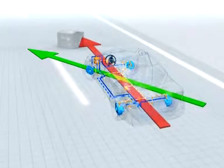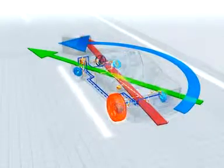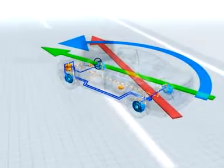In split seconds, ESP brakes the left rear wheel very briefly and sharply. This produces the desired counteracting force so that the car responds as the driver intended.